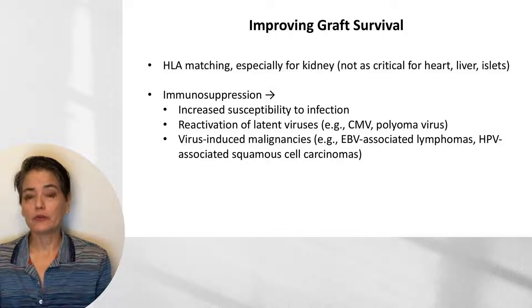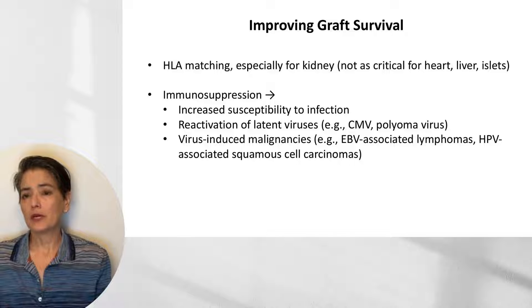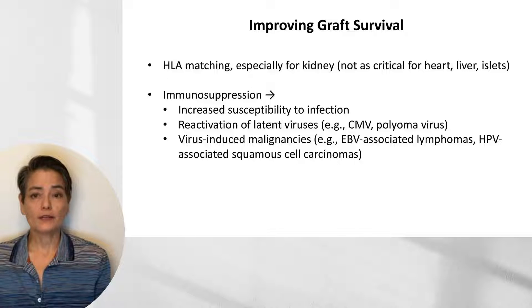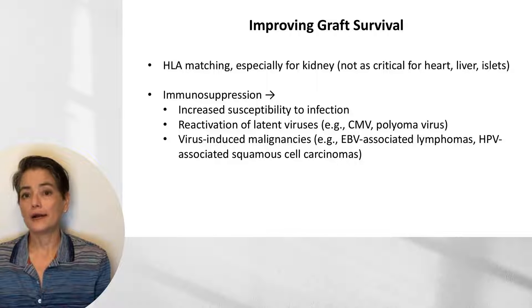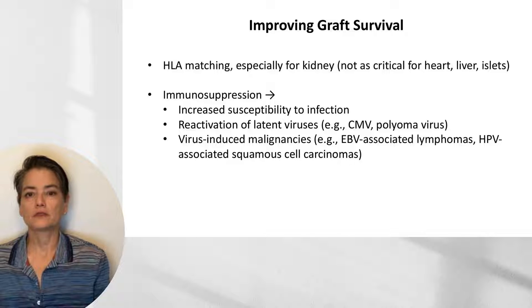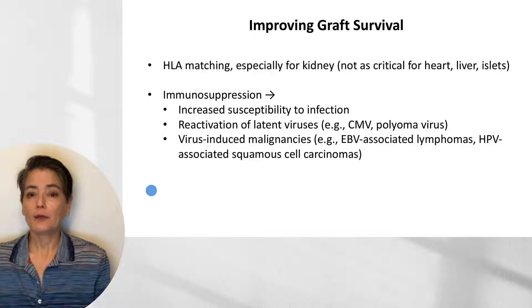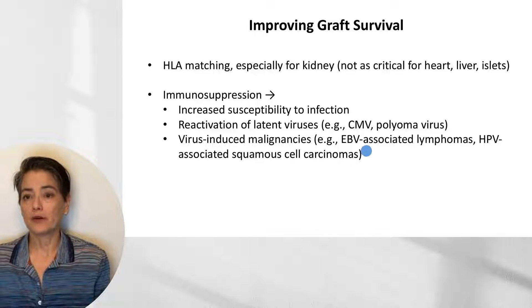To improve graft survival, HLA matching helps with acute rejection and is the focus for kidney transplants. For other organs such as heart, lungs, and liver, anatomic constraints and urgency are higher — kidneys have dialysis as a backup, but failure of a heart, liver, or lung transplant can be catastrophic. Immunosuppression is also used, though it increases susceptibility to infection, reactivation of latent viruses such as cytomegalovirus and polyomavirus, and virus-induced malignancies such as Epstein-Barr virus-associated lymphomas and HPV-associated squamous cell carcinomas.